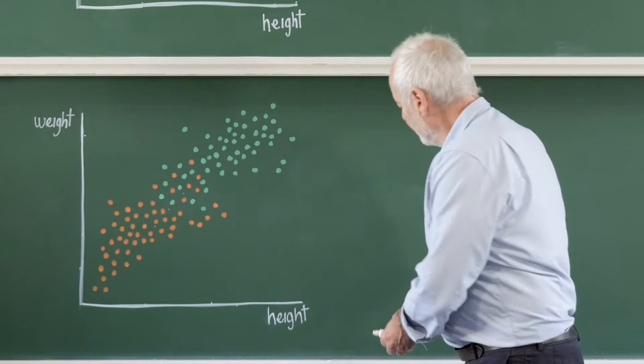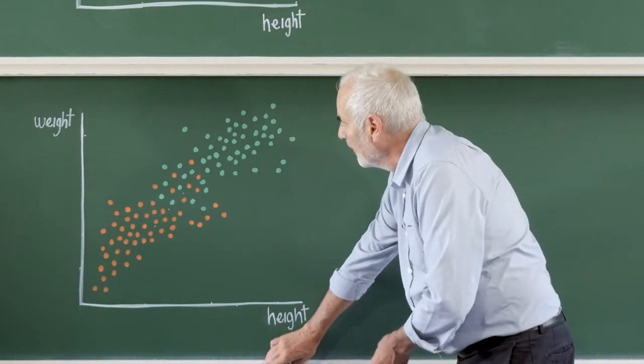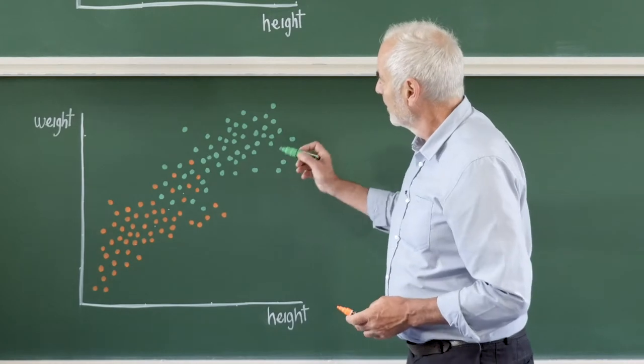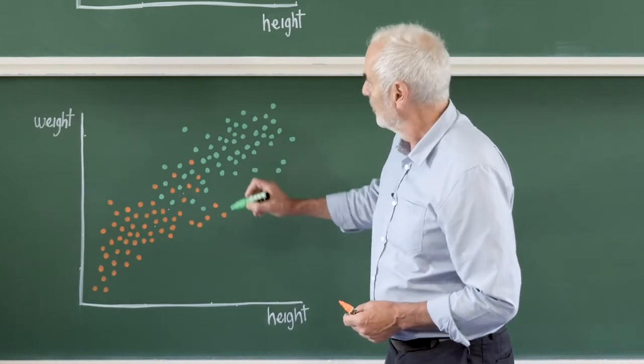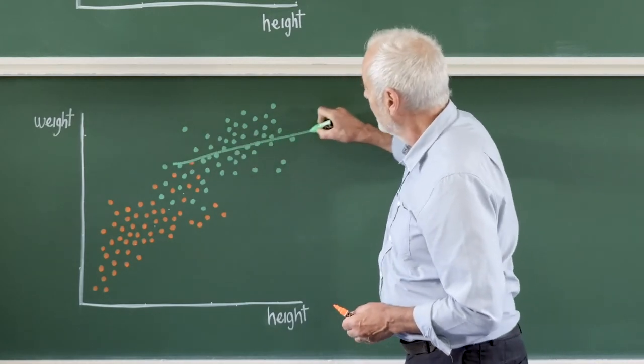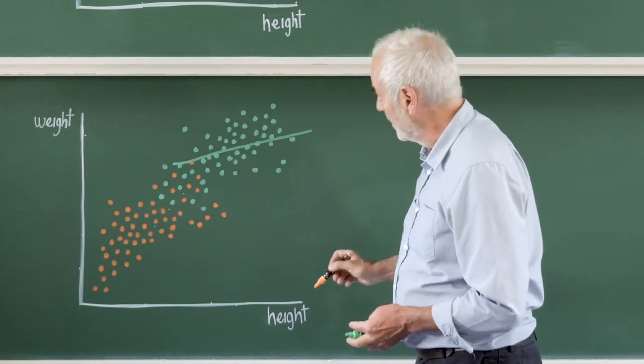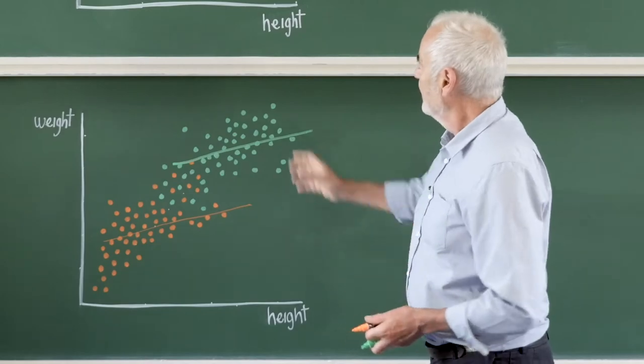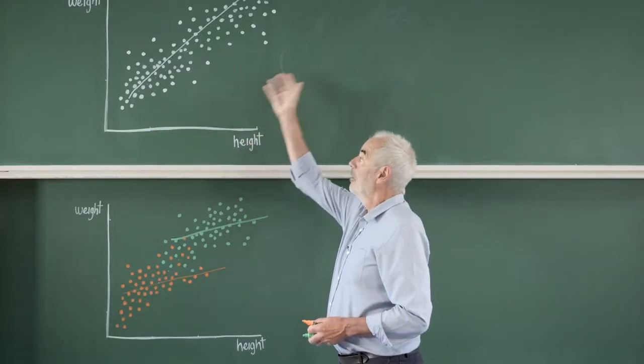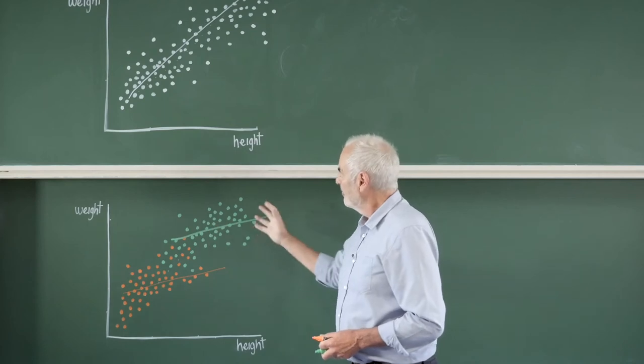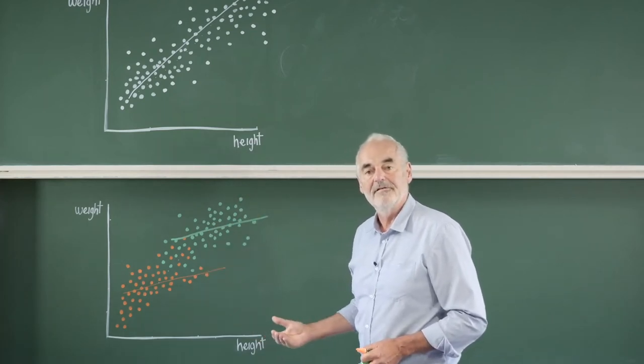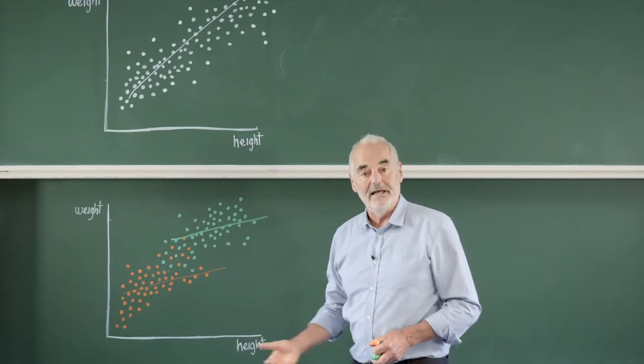Plotting the men in green and the women in orange, we find out that there's still a relationship between height and weight in men and in women. But this relationship is a lot less strong than it was overall. What we say is that this is the relationship adjusted for sex, in other words keeping sex fixed.